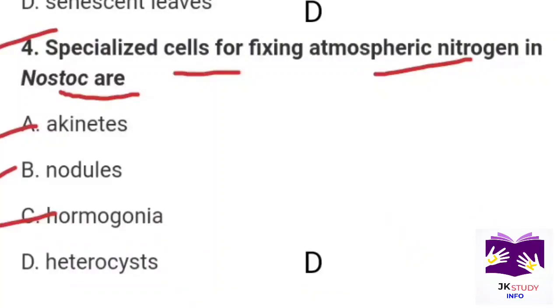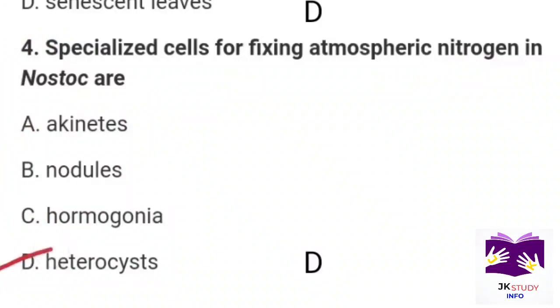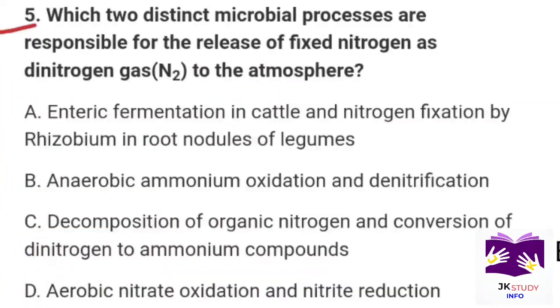Option A: akinetes. Option B: nodules. Option C: hormogonia. Option D: heterocysts. Correct option is Part D: heterocysts.